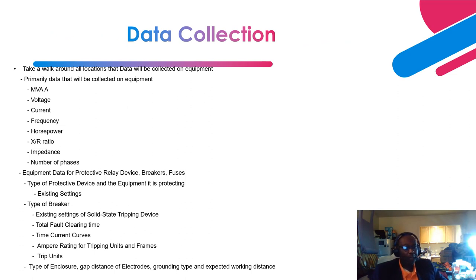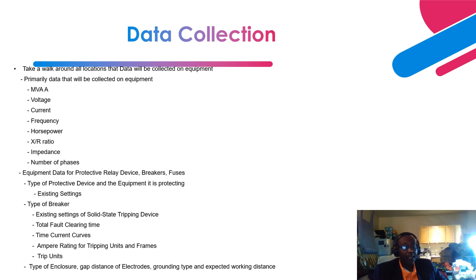Now let's talk about data collection itself. In general, the typical parameters that need to be collected on equipment include: MVA rating, voltage rating, current rating, frequency, horsepower rating, X/R ratio, impedance, and number of phases — since you may encounter single-phase or three-phase equipment. For protective relay devices, breakers, and fuses, the existing settings are very important. For breakers, you can obtain existing settings for the solid-state tripping device, the total fault clearing time — which may be two, three, five, or eight cycles — the operating mechanism for the tripping unit, and the frame size, especially for low-voltage power breakers.